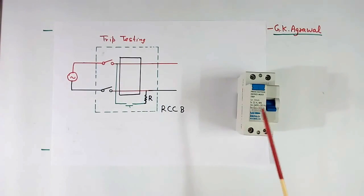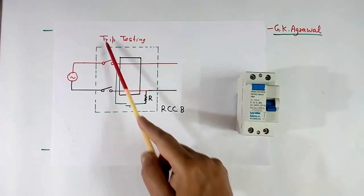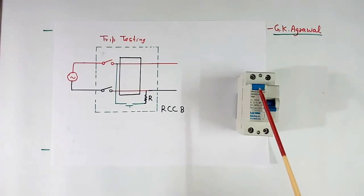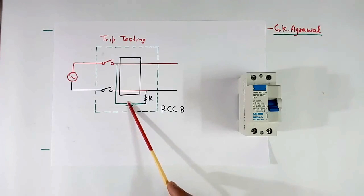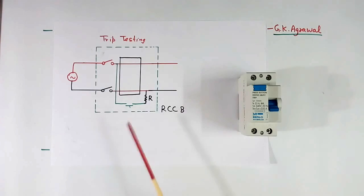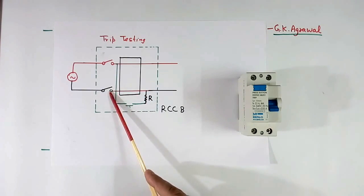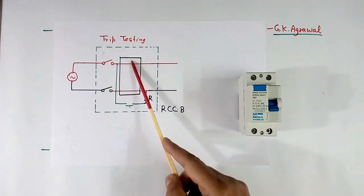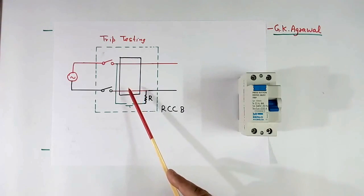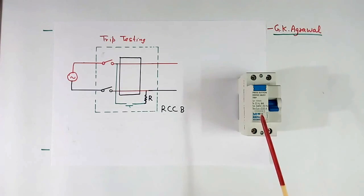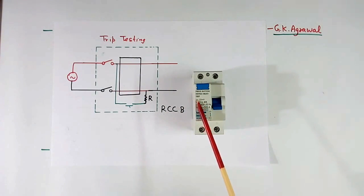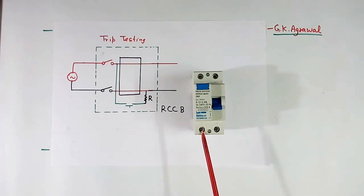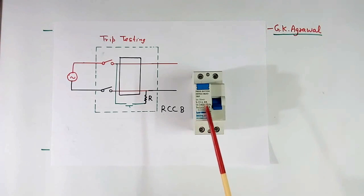Now, trip testing. Whenever we connect an RCCB, we test whether it is tripping or not. For that there is always a test button — here the blue color button. When we press this button, a current flows through one wire but not through the other wire, so these 2 currents will not be equal. A residual current will be created, because of which the RCCB will trip. So we can test that it is working or not. On this RCCB, I_DN = 30 mA is the trip type, IN = 25 A is the nominal current, and DP means double pole — there are 2 poles.